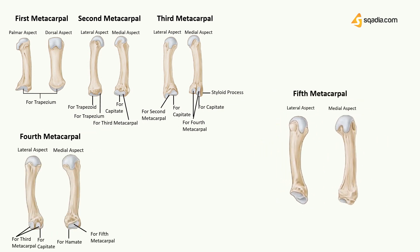The fifth or little metacarpal bone is one of the smallest of all five metacarpals. Its base is slightly different from the others: its lateral part is non-articular, and the lateral side of the base articulates with the hamate bone. The proximal part of the lateral surface of the shaft articulates with the fourth metacarpal, and the distal part receives the fibers from the fourth dorsal and fourth palmar interosseous muscle.